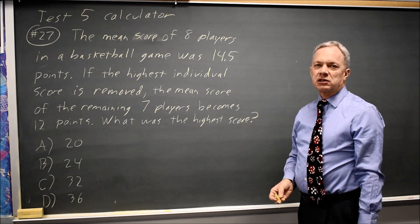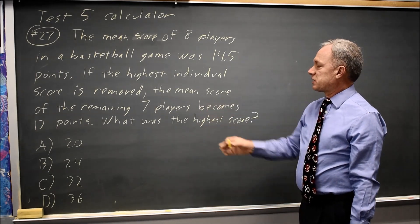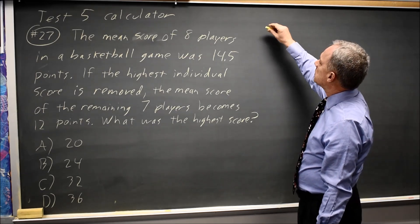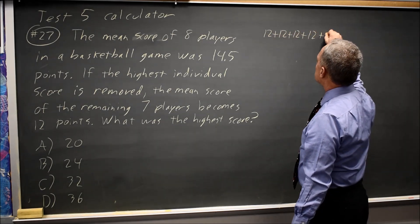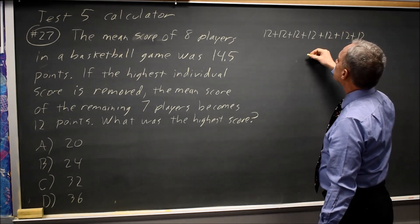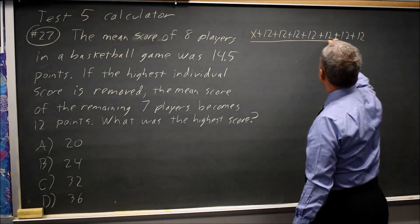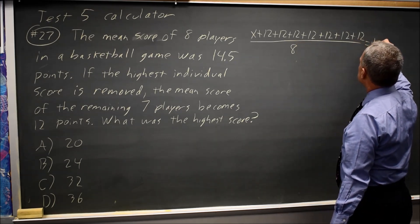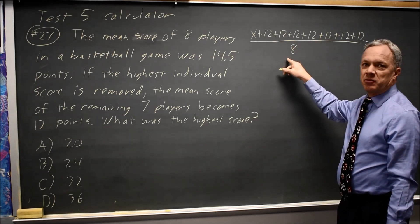They want to find the highest score. The easiest way to do this is to think of those other seven scores that have a mean of 12 as all being 12, because that won't change the mean. So I have 12 plus 12 plus 12 plus 12 plus 12 plus 12 plus 12 — seven scores of 12 — and then my highest score, which I'll call X. So X plus those 12s, divided by 8, equals 14.5. That's the formula for the mean: add up all the numbers and divide by how many there are.